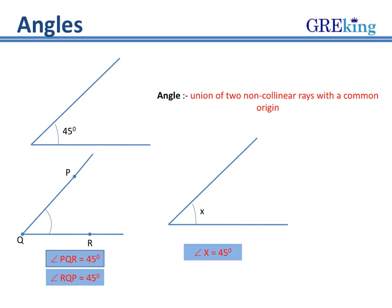Moving on we understand what is an angle. The union of two non-collinear rays with a common origin is called an angle. In the figure you see that PQ and QR are two non-collinear rays with a common origin at Q. When we write the angles it is depicted as angle PQR or angle RQP, read in the anti-clockwise or clockwise direction, which is equal to 45 degrees. You can also refer to it directly with the help of just the common origin, saying that angle Q is equal to 45 degrees.